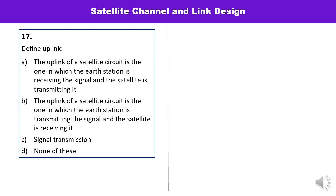Next: define uplink. When an earth station is transmitting a signal towards a satellite, that particular link is known as the uplink. So the uplink of a satellite circuit is one in which the earth station is the transmitter and the satellite is the receiver. Option B is the correct one.